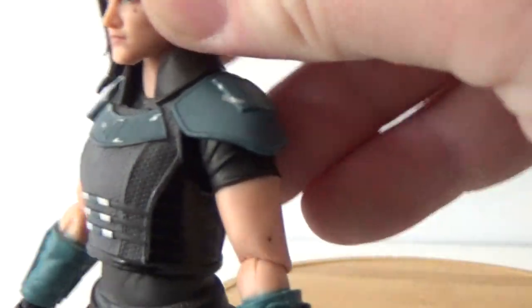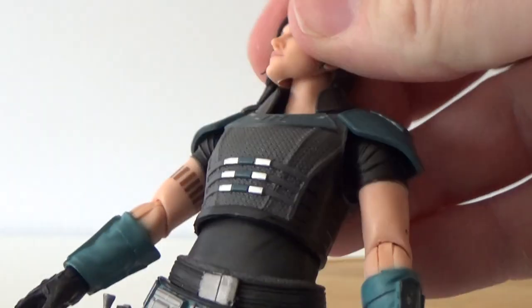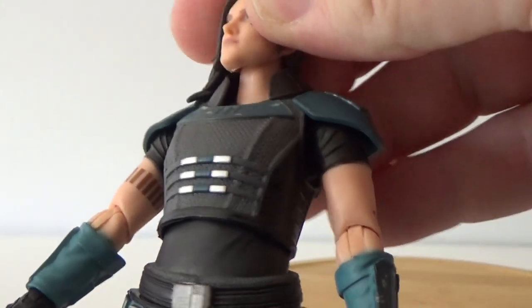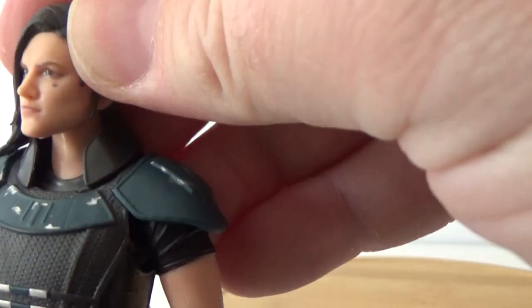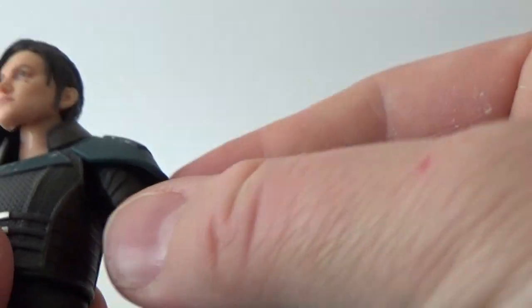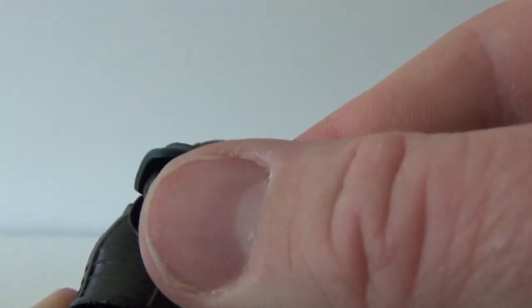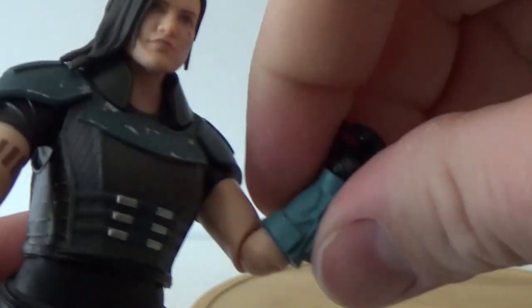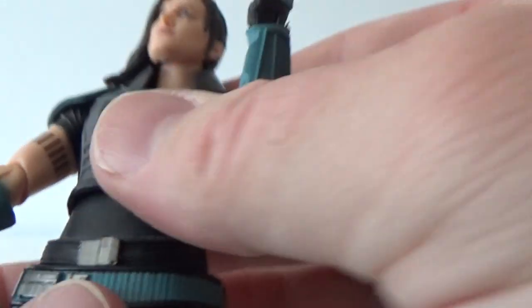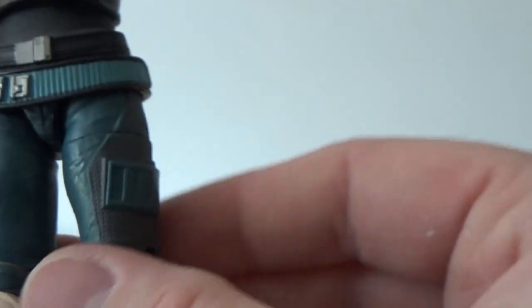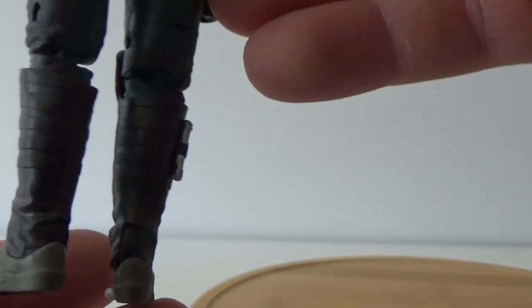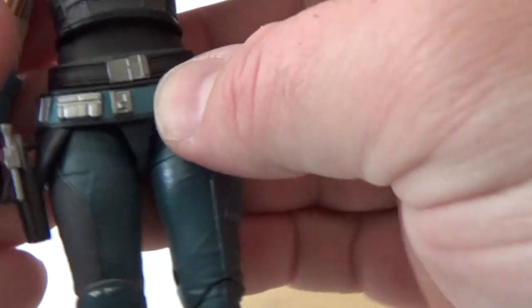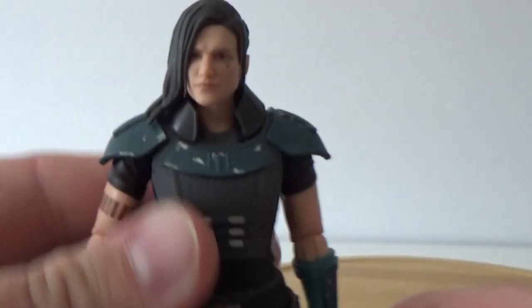In terms of articulation, she has a ball jointed head. Looks like she's got the double neck joint, not so much the lower but the upper. Ball hinged shoulders. Ball hinged elbows which do move nicely. Good range of movement there. Ball hinged wrists. Upper joint in the torso there. Ball hinged in the hips. Swivel cut in the thighs. Double joints in the knees. And ball hinged in the ankles. Just a really, really good action figure this one.